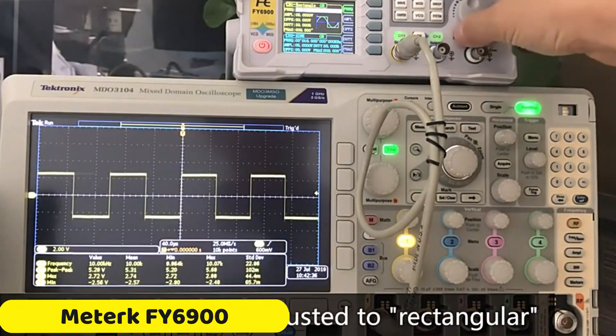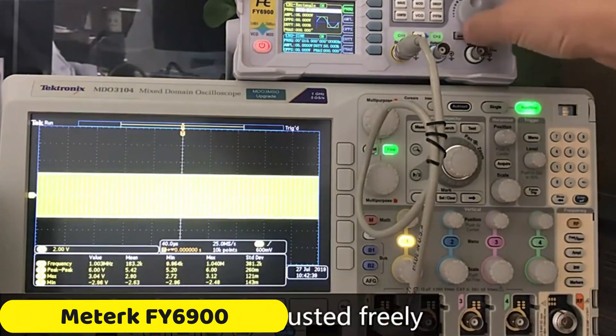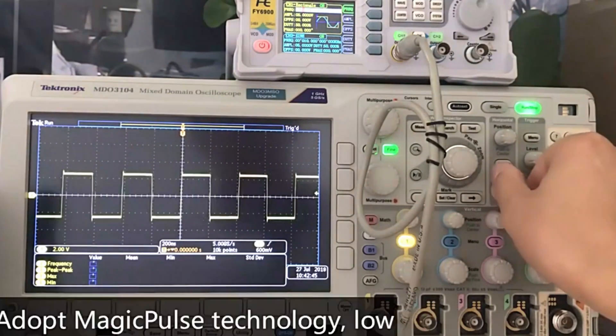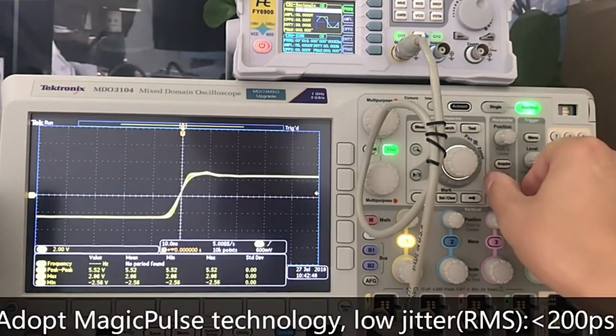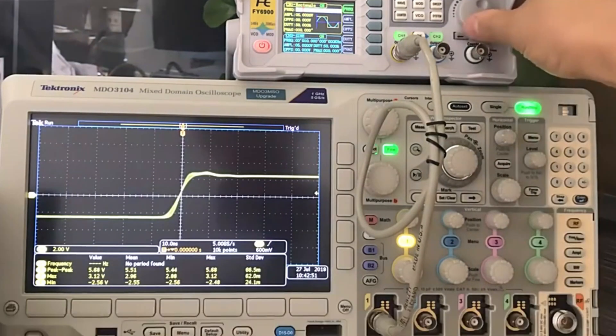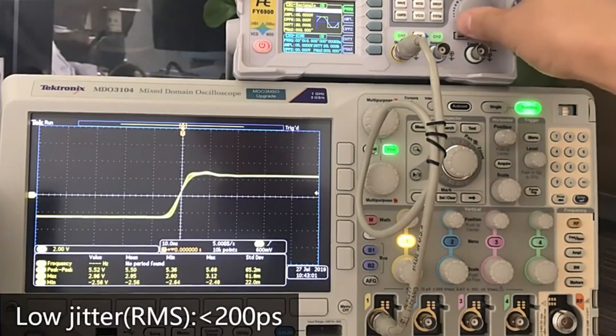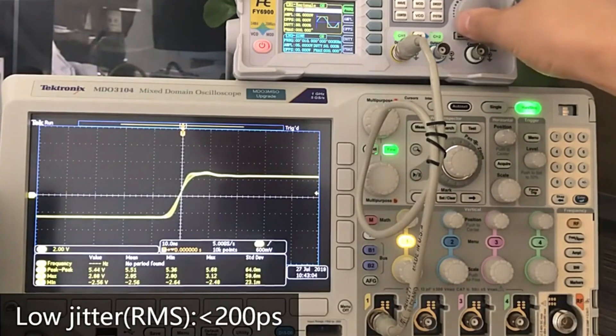Number 3: METERC FY6900 Signal Generator. The METERC FY6900 Signal Generator is a reliable and versatile instrument that uses direct digital synthesizer technology to deliver stable, precise, and low-distortion signals. It features a 2.4-inch TFT color LCD display, Magic Hulls technology for low jitter, a high-speed DA converter, and a wide range of waveforms.